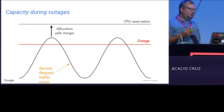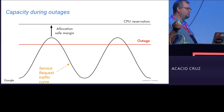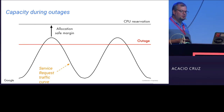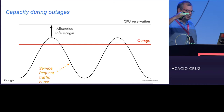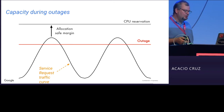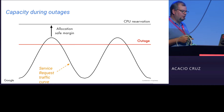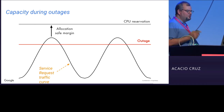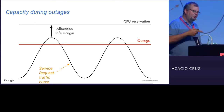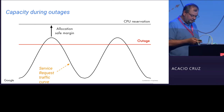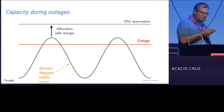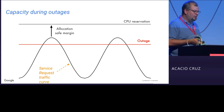If you have an outage — if a cluster disappears or a set of machines disappear — then suddenly your capacity is below your peak. If it happens during the trough when it's not peaked, that's fine, you don't notice. But if it happens at the peak, we have a problem. That's the typical service overload problem.